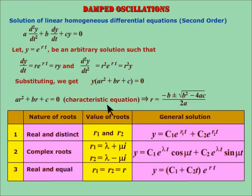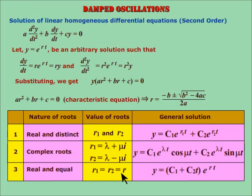There are three possibilities. Case 1: the roots are real and distinct. Let the roots be r1 and r2; then the general solution is as shown. Case 2: the roots are complex. Let r1 equal to lambda plus mu i and r2 equal to lambda minus mu i; then the general solution is as shown. Case 3: the roots are equal, where r1 equals r2 equals r; the general solution is as shown. We see that only when the roots are complex does the general solution become sinusoidal in nature; otherwise not.